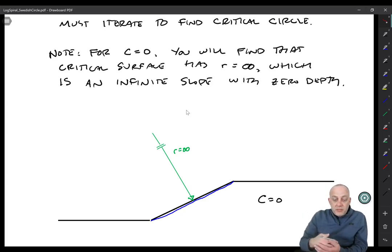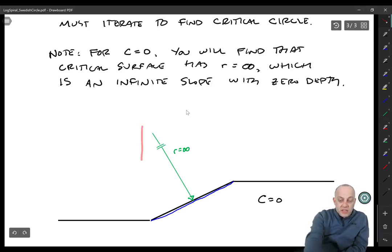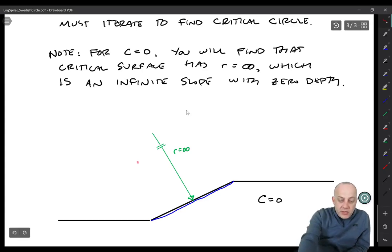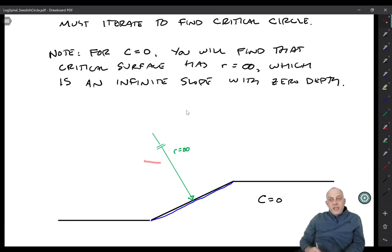If you do use the computer program, what you'll find is that usually you'll do what's called a grid search, and that's where you have some kind of a square or rectangular region, and you say the center of the circle has to be somewhere within that grid, and then it'll do 5,000 calculations or whatever and give you the minimum factor of safety. What you'll find is that the critical point is right on the boundary of the grid, and anytime you have the critical point on the boundary of the grid, what that means is you have to move the grid and try again, and so you'll have to keep moving your grid up and to the left until eventually you would get to infinity and you would get the right answer that you would get from an infinite slope analysis.